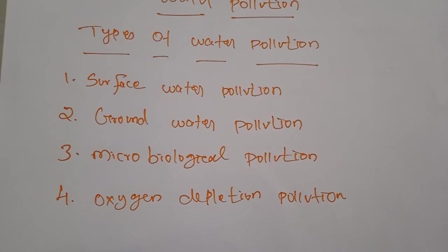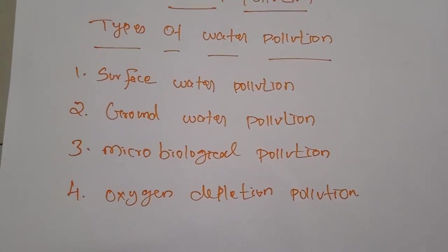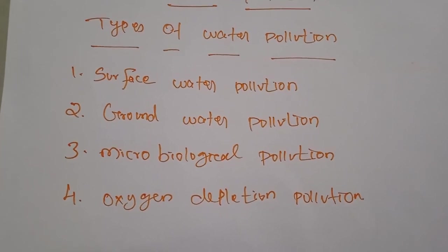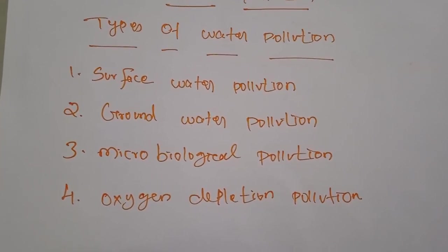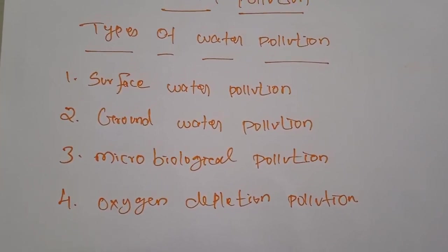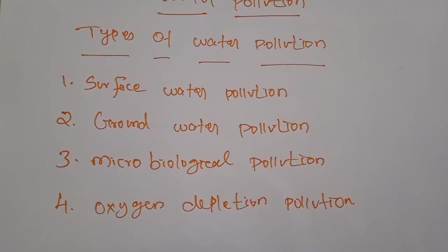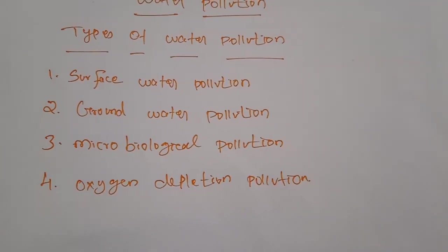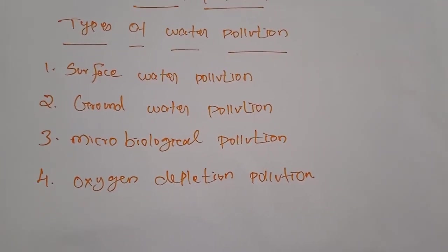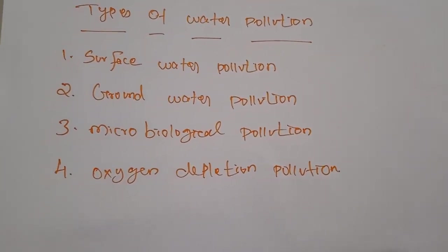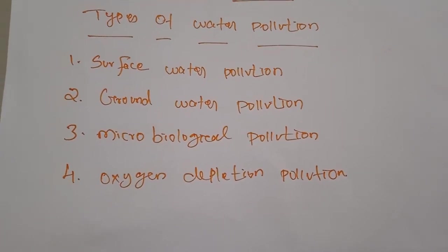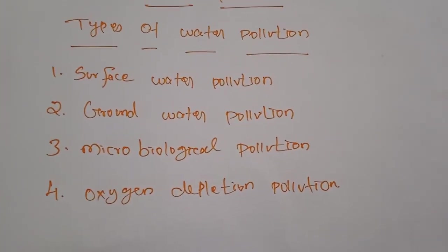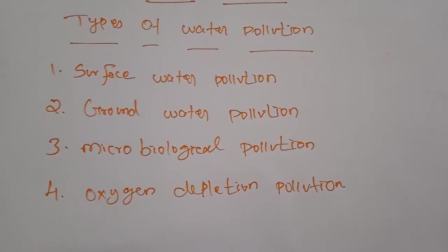Next, oxygen depletion pollution. When oxygen levels in the water are depleted, relatively harmless aerobic microorganisms die and anaerobic microorganisms begin to thrive. If oxygen levels in water are depleted by human activities or any other activities, this is also considered a type of water pollution.